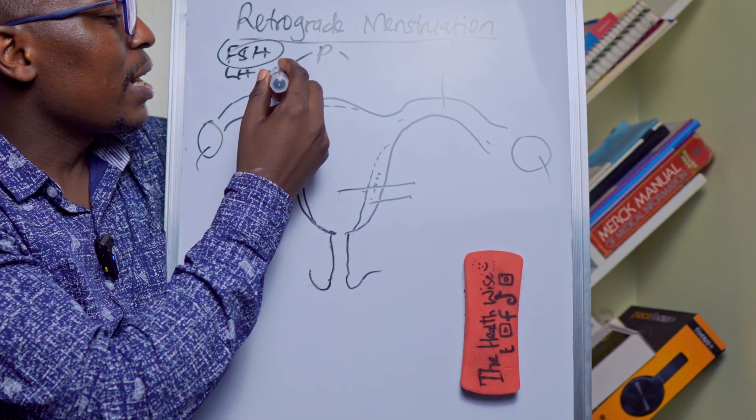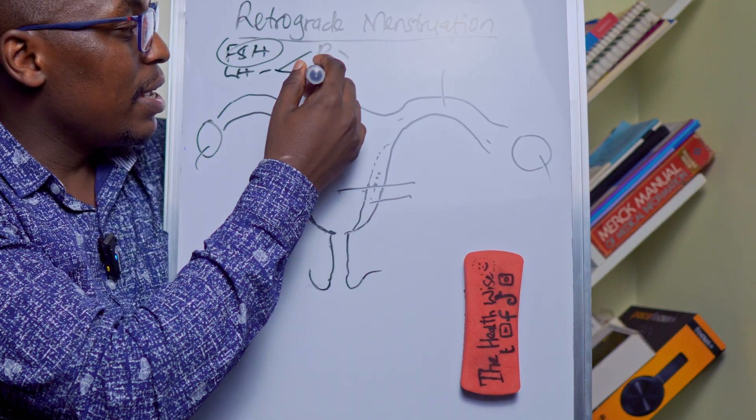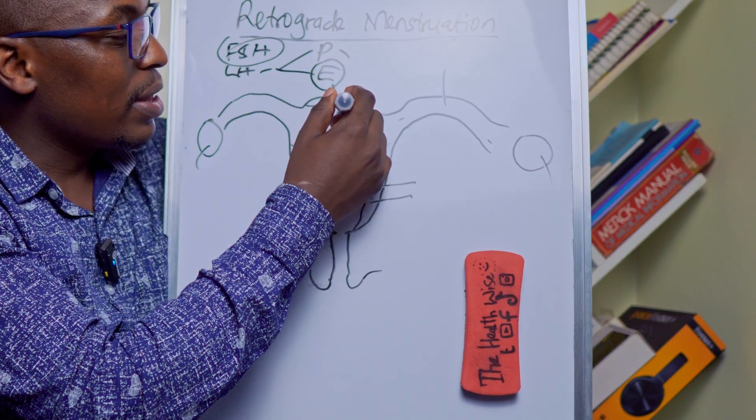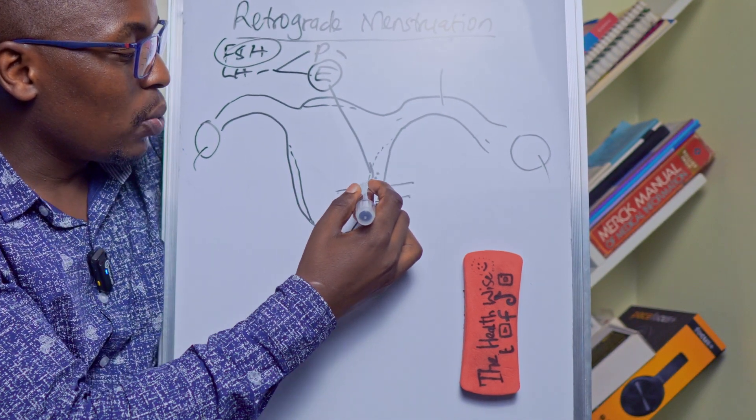In case there is no fertilization then estrogen will be produced. Now this estrogen is the one that will be responsible for demolition of this wall. Now you already have this wall so it will be demolished.